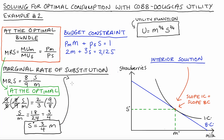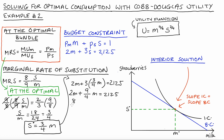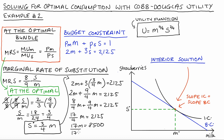Using our budget constraint 2m plus 3s equals 2,125, and substituting s equals 3 quarters times m, we get 2m plus 3 times 3 over 4 times m equals 2,125. Multiplying through: 2m plus 9 over 4 times m equals 2,125. Rewriting 2m as 8 over 4 times m and adding: 17 over 4 times m equals 2,125. So 17m equals 4 times 2,125 which is 8,500, and dividing by 17, the optimal amount of milk is m-star equals 500.